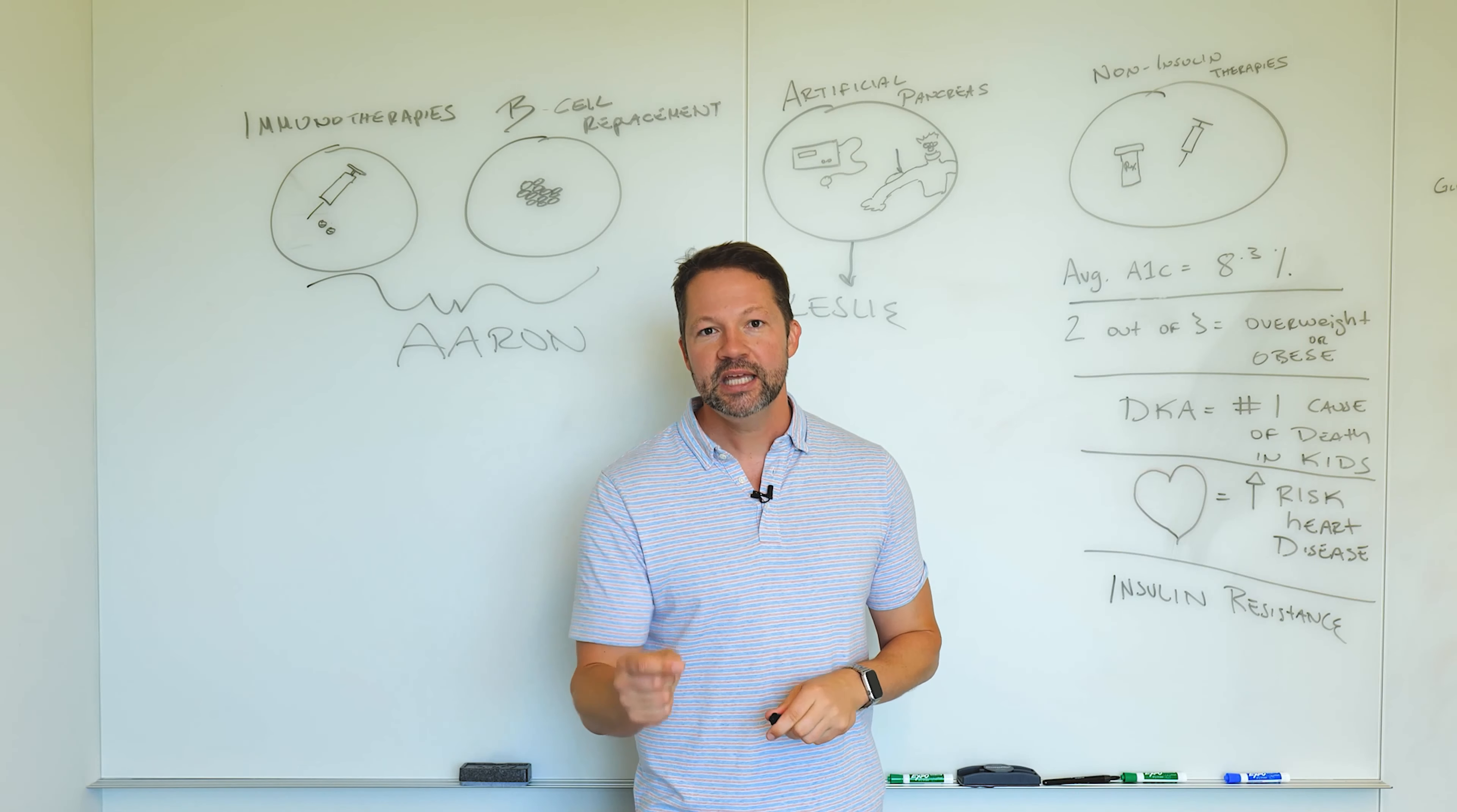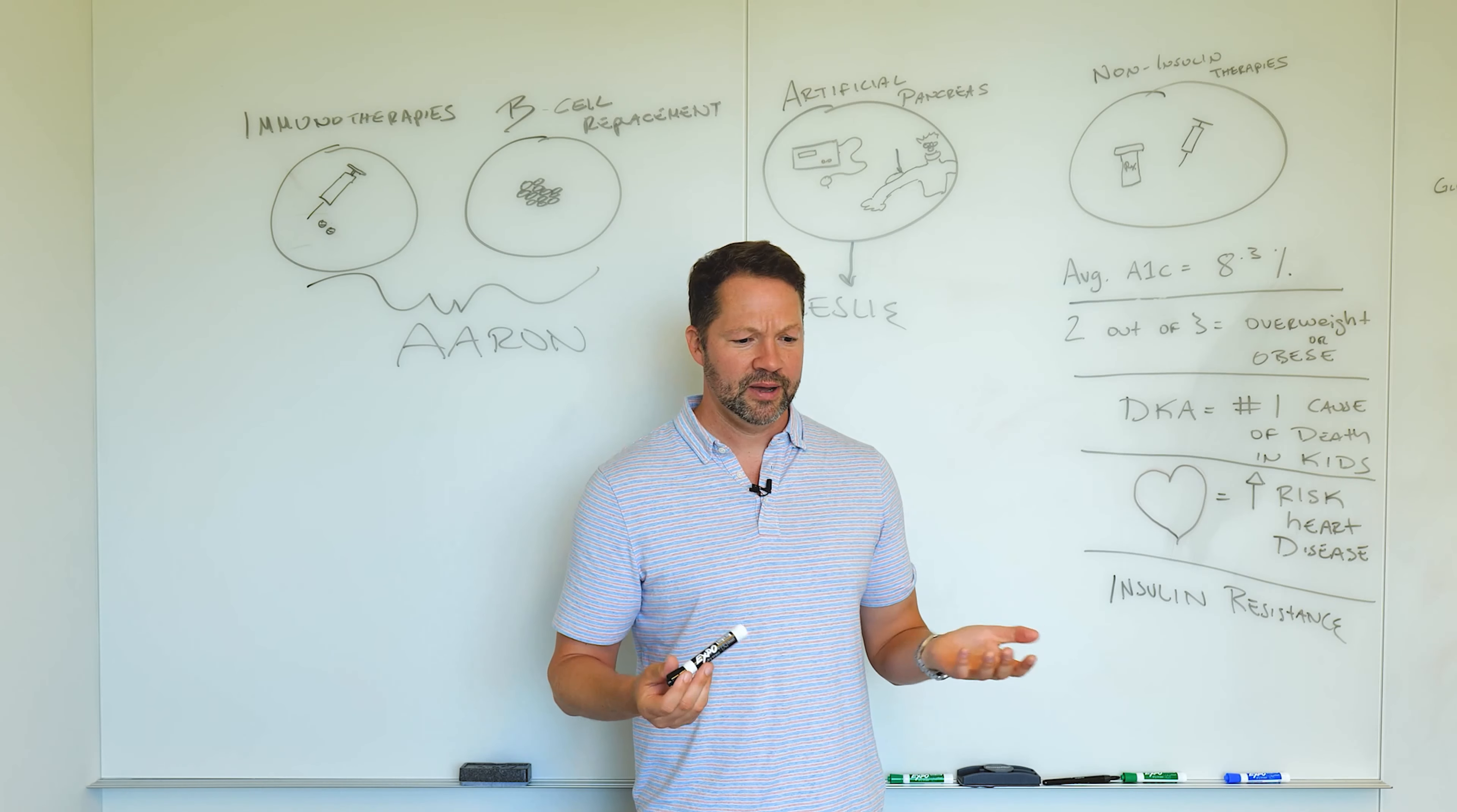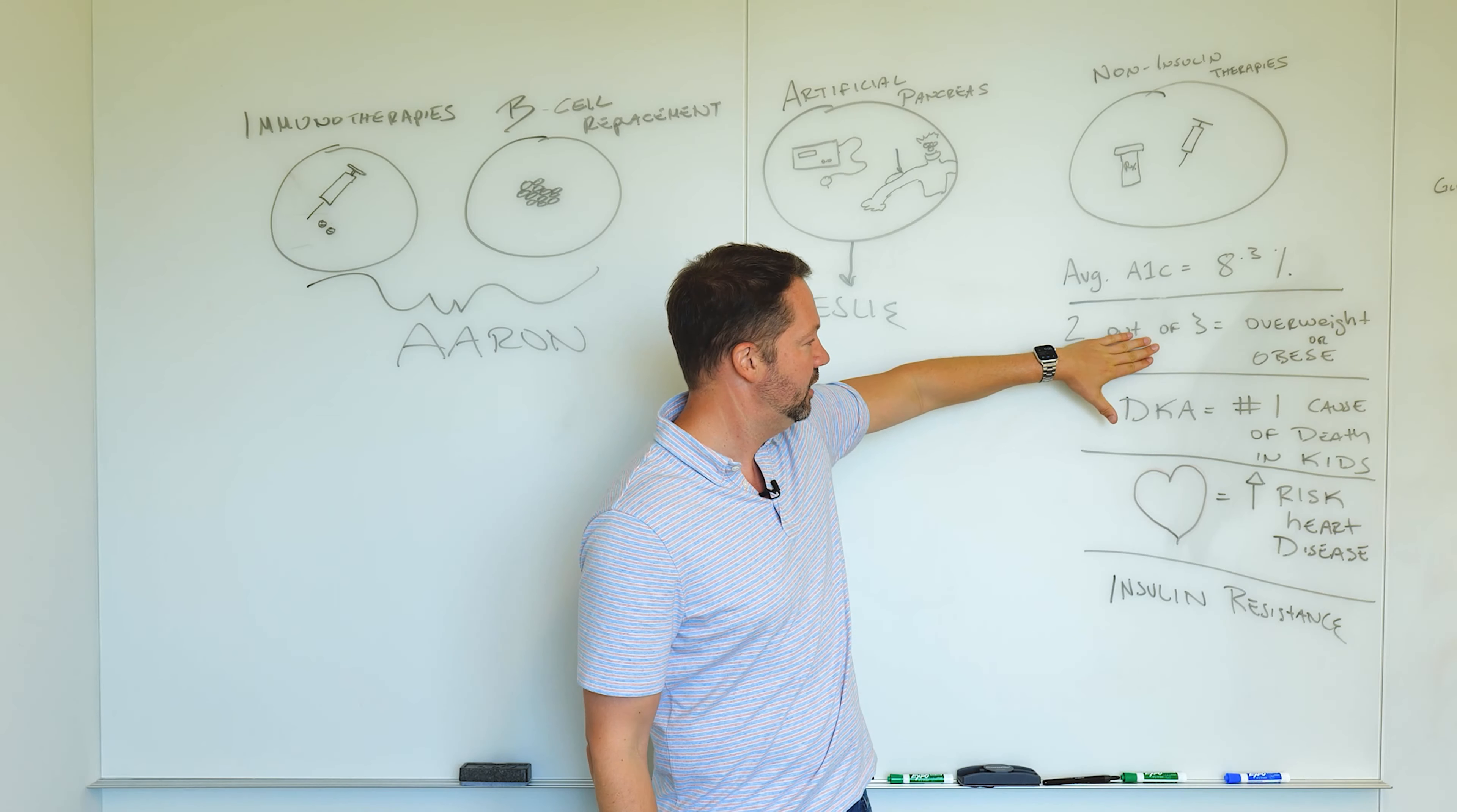So we talk about that with type twos all the time. Of course, weight, obesity is a huge problem and type two diabetes, but guess what? Us type ones, we can gain weight too. We can eat just like anybody else. And I think it's actually easier for type ones to gain weight because you're taking insulin. You can get low. You have to eat at times you don't want to eat. It can make exercise difficult, et cetera.